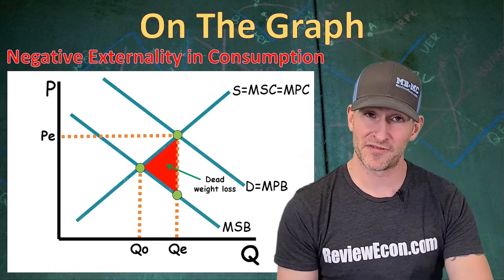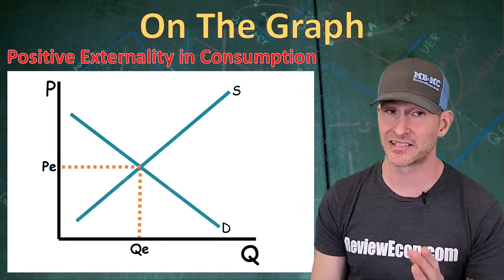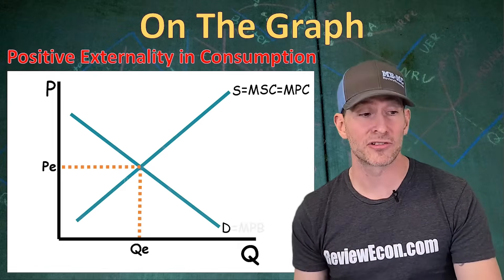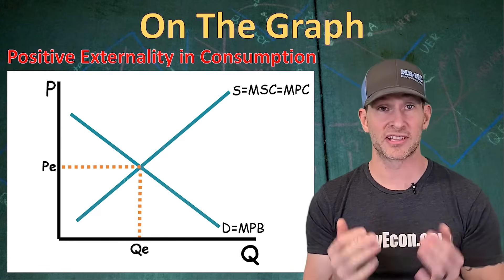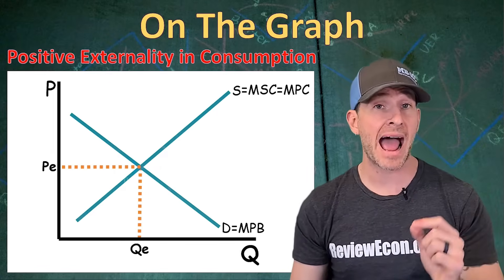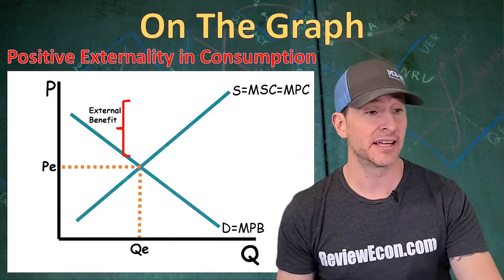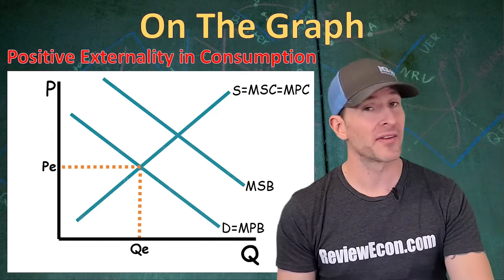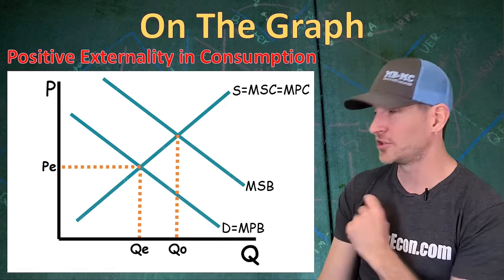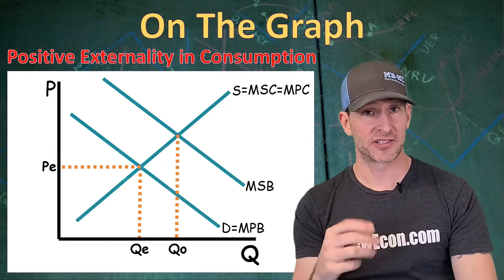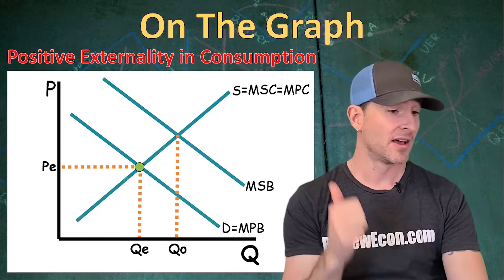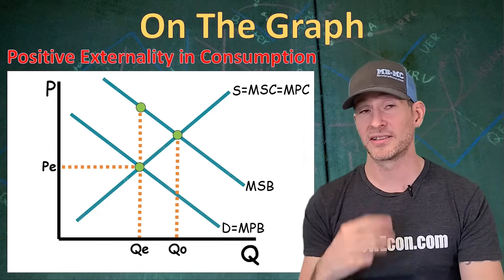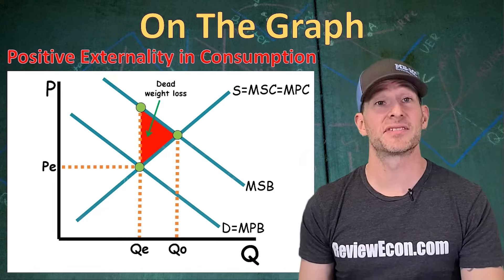Now we move on to positive externalities, starting with the more common graph — positive externalities in consumption. The supply curve represents marginal social cost and marginal private cost. The demand curve is the marginal private benefit. Since consumers are producing this positive externality through their consumption, we add the external benefit to the demand curve to give us a higher marginal social benefit curve above demand. The allocatively efficient quantity QO is where marginal social benefit equals marginal social cost. Deadweight loss is found from three points: marginal social cost at market quantity, marginal social benefit at market quantity, and where they intersect at QO.